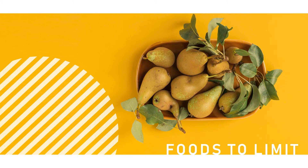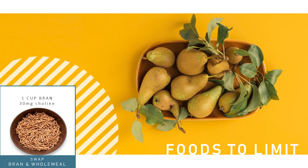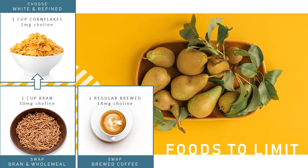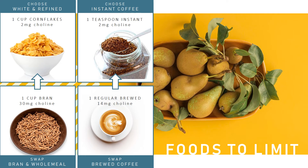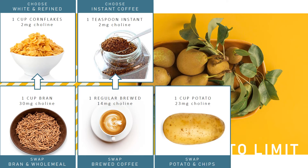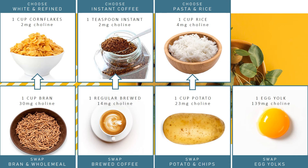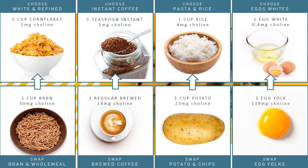Some tips for reducing choline intake include swapping bran and wholemeal cereals and breads for white refined options — for example, switching from All Bran to cornflakes will reduce choline by 28 mg. If you drink a lot of coffee, try switching to instant coffee to reduce choline intake over the course of the day. Try switching from potato to white rice, which will reduce choline by 20 mg per cup. Where possible, select and make foods using egg whites only, as egg yolks contain 130 mg of choline, making them a significant contributor to daily intake.